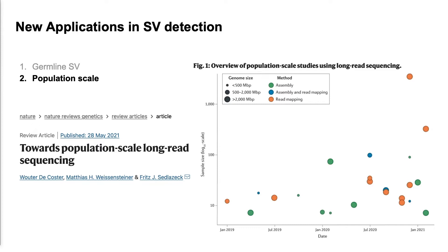But this is not everything - this is just a single sample. We can see a clear trend, as shown in a review we published last year, that the number of studies using long read sequencing is constantly increasing - not just studies using it, but studies using multiple tens, hundreds, or thousands of long read genomes. To cope with that, we need something that works at this kind of scale, not just improving single sample calling.